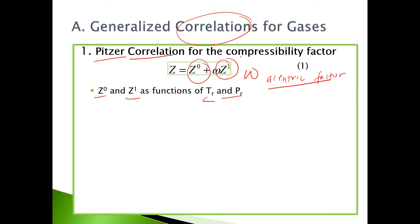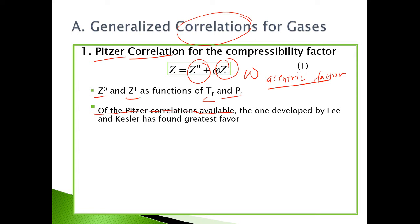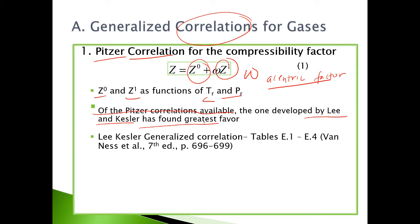There are tables for Z naught and Z1 from Pitzer. Of the Pitzer correlations available, the one developed by Lee and Kessler has found the greatest favor. The Lee-Kessler Generalized Correlation can be found in Van Ness, if your edition is 7th.